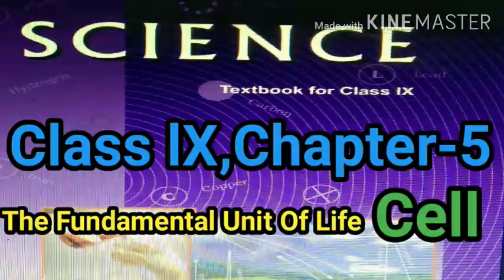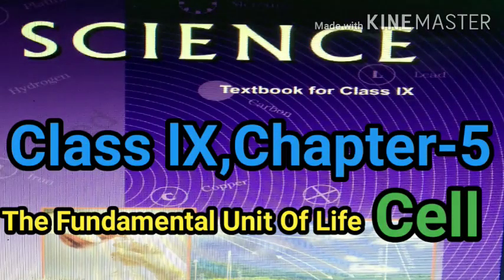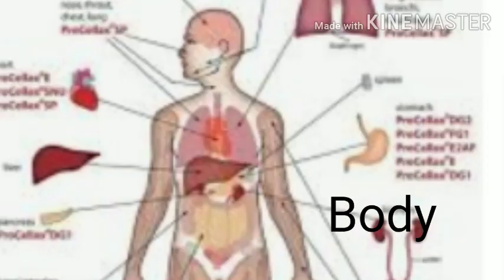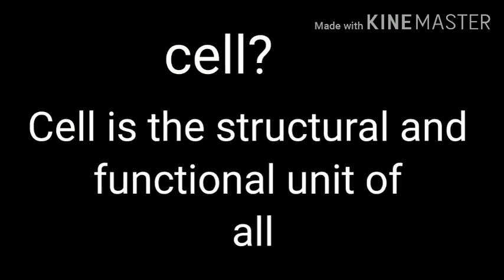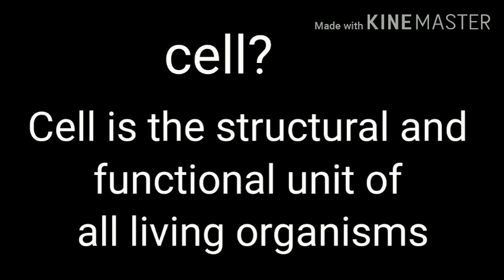We know that all living organisms have a body and their body is made of cells. So today we have to know at first what is a cell. Cell is the structural and functional unit of all living organisms.